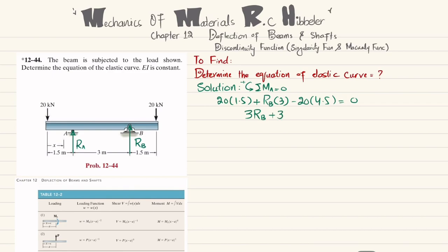Simplifying: 3R_B + 30 − 90 = 0, so 3R_B = 60, giving R_B = 20 kilonewton.